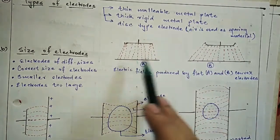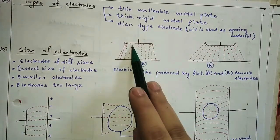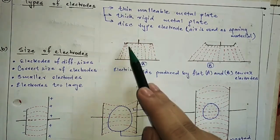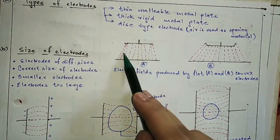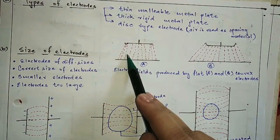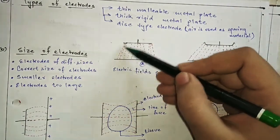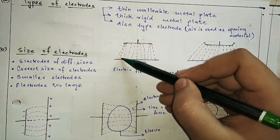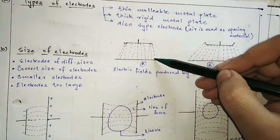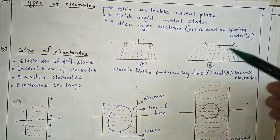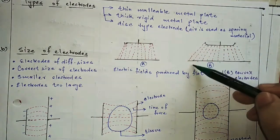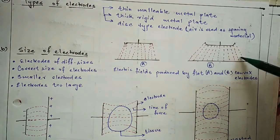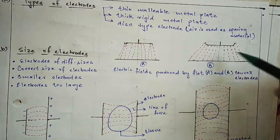With a thick flat metal electrode, the line of electric field shows more concentration at the edges, which can cause burning. But if we use a convex electrode, the electric field spreads out evenly, so burning does not occur.